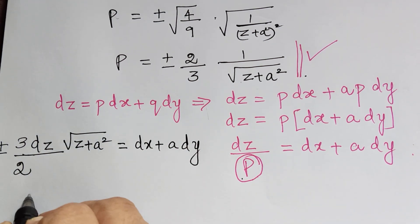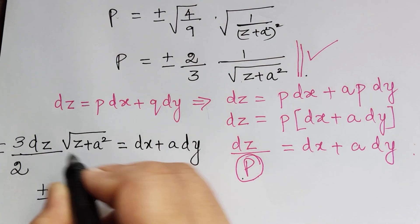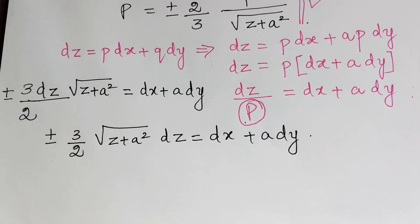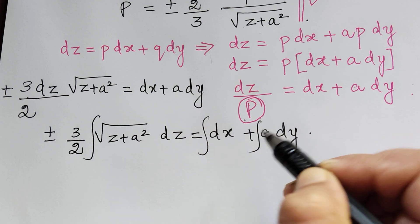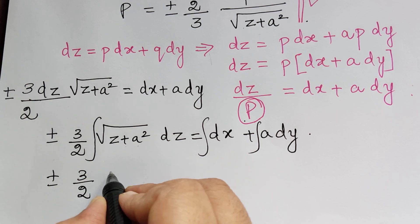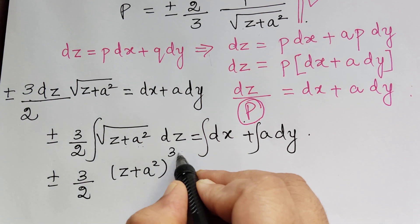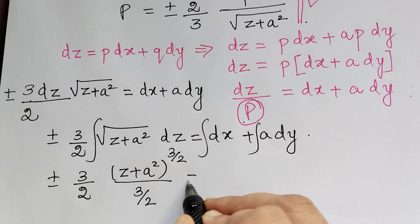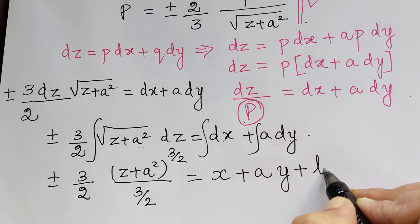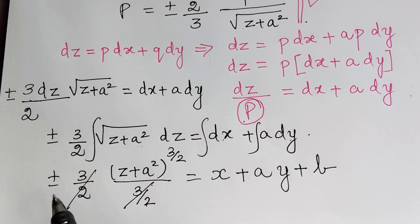This can be written properly as: plus or minus (3/2) times the square root of (z plus a squared) dz equals dx plus a dy. Integrating on both sides: the integral of (z plus a squared) to the power 1/2 gives (z plus a squared) to the power 3/2, divided by 3/2, multiplied by plus or minus 3/2, equals x plus ay plus b. The factors of 3/2 cancel out.